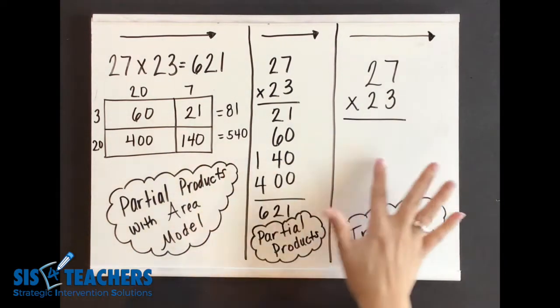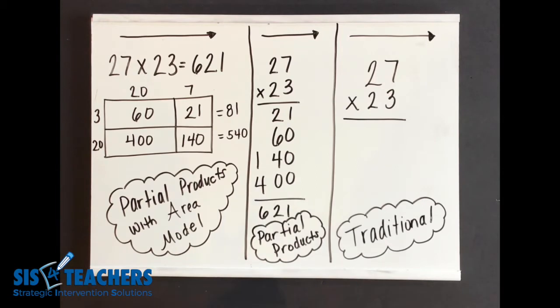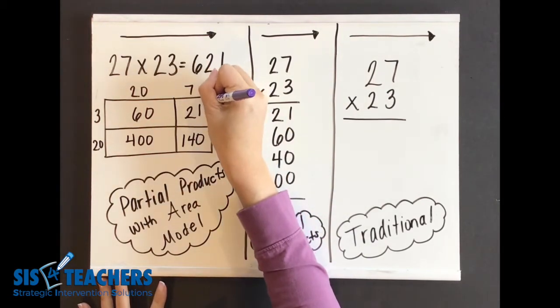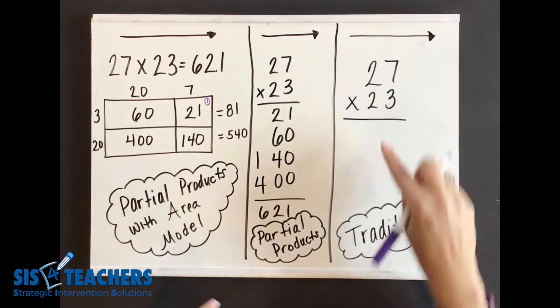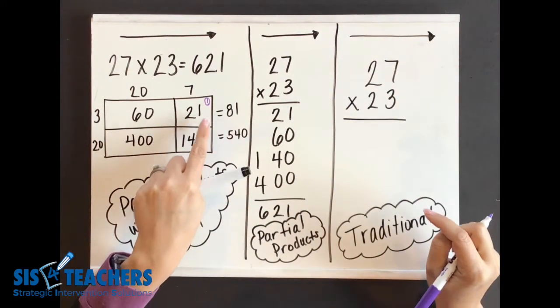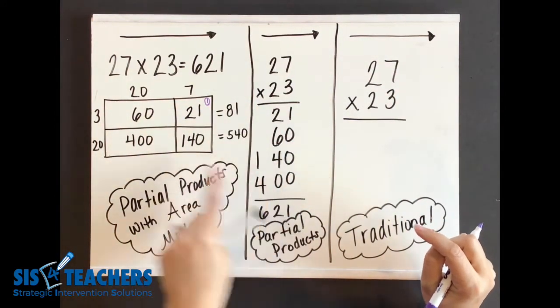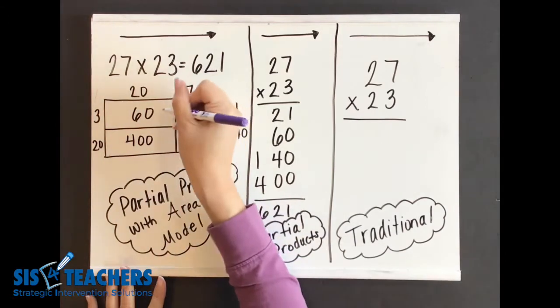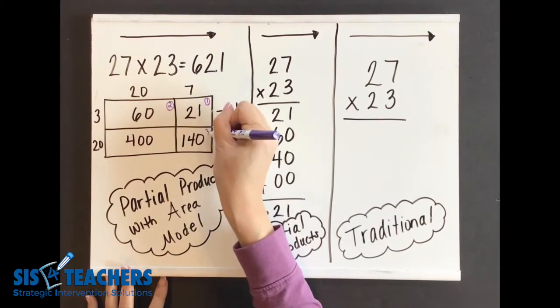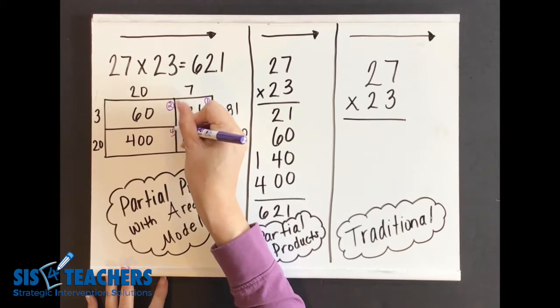What I'm going to do over here to help you make that connection is I'm going to number the boxes in the order that we are going to go through this process. It matched up really nicely as we did it here. I'm going to mark this as box number two, and then we're going to go to box number three and box number four.